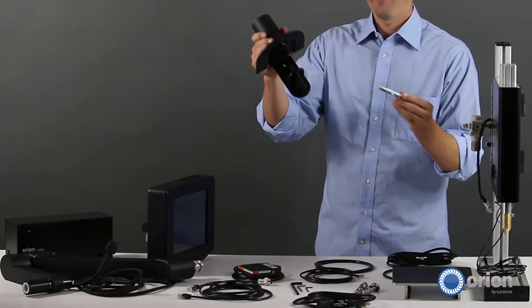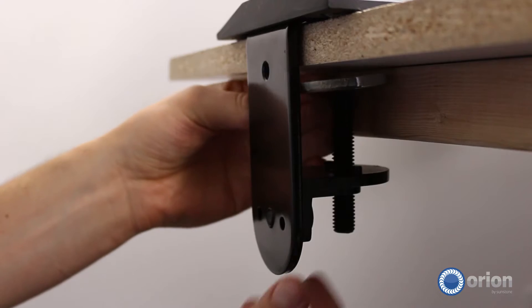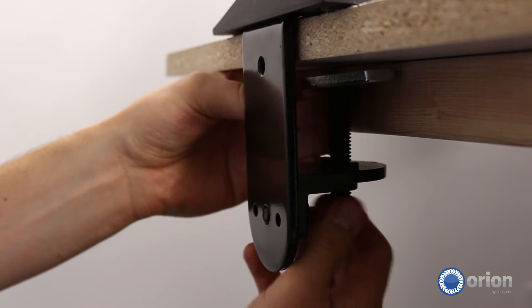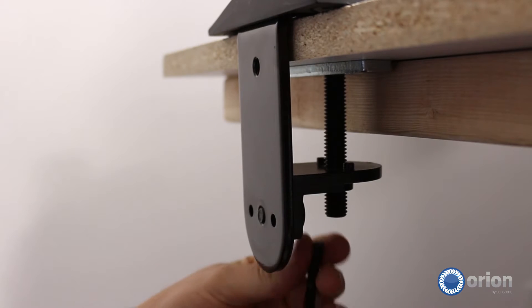The Orion Microscope Arm Table Mount will clamp to any tabletop. Simply place the table mount on your tabletop in your desired location and then tighten the screw located at the bottom of the arm base with an Allen wrench.